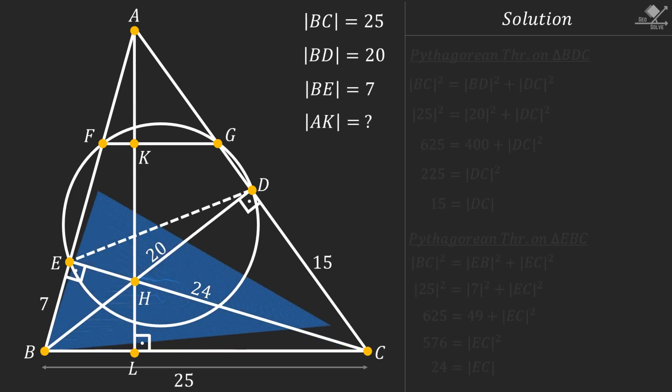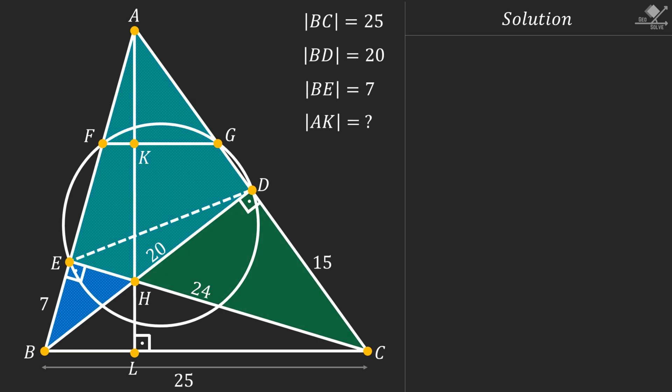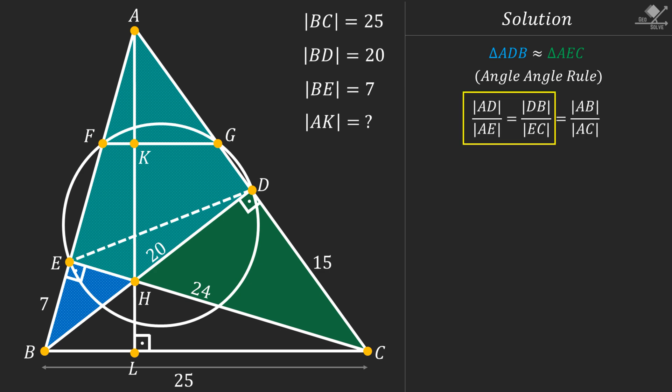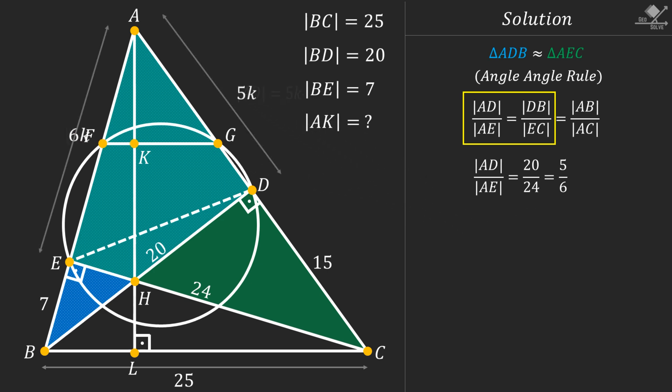Now focus on these blue and green right angle triangles. Notice that they are similar triangles by angle angle rule. So we can write these similarity ratios. First let's use the first part of this equality and write down the values we know. Simplifying this we will have a 5 over 6 ratio for the sides AD and AE. So let's call side AD as 5k and side AE as 6k, and show these values on the diagram.